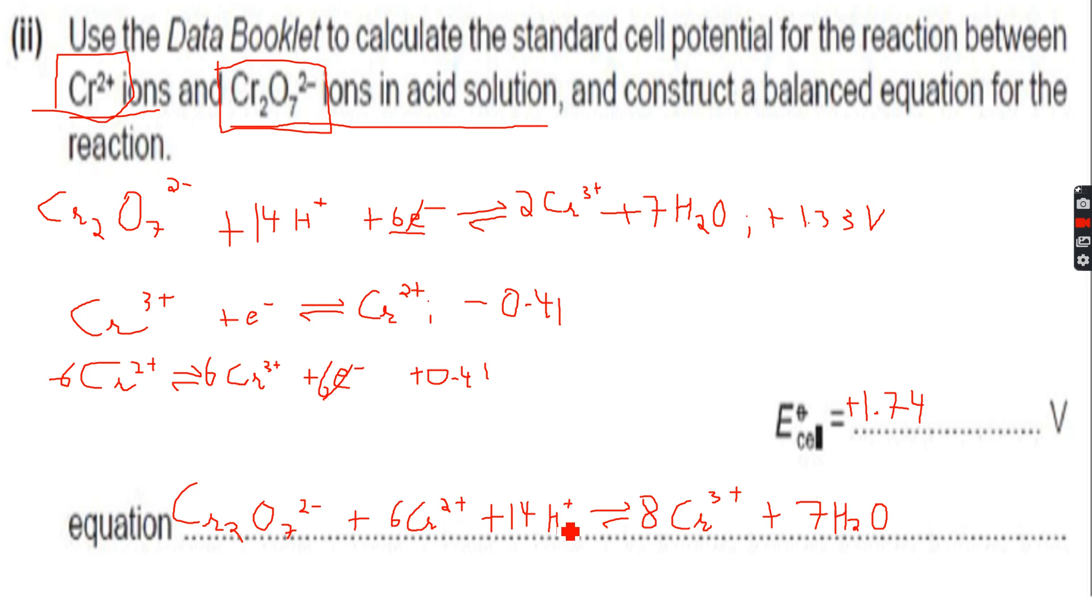Now if you see the charges are balanced, so -2 + 8 is +6, +14 is +20. Okay wait, I made a mistake. So -2 + 12 is +10, +10 + 14 is +24. So the total charge on the left hand side is +24, and in this case it's +24 again because 8 × +3, so everything is balanced.